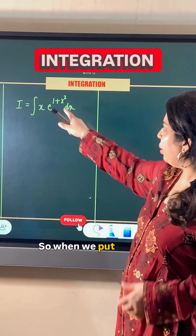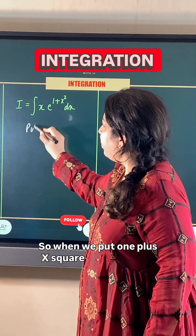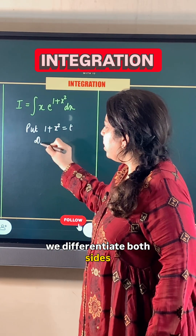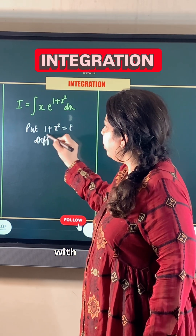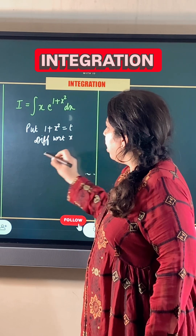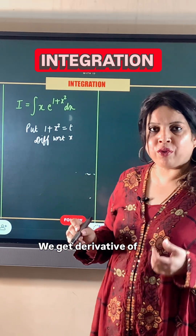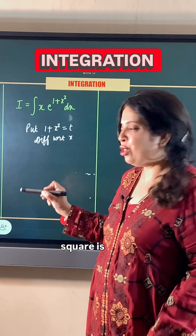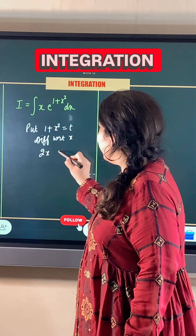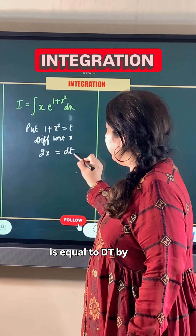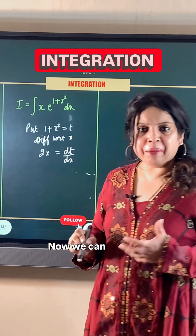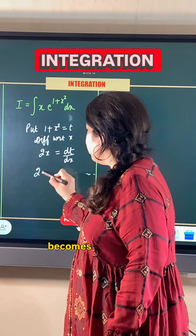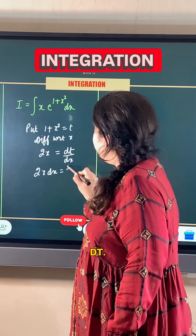When we put 1 plus x squared equal to t and we differentiate both sides with respect to x, we get derivative of 1 as 0 and derivative of x squared is 2x, equal to dt by dx. We can multiply both sides by dx, so this becomes 2x dx is equal to dt.